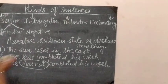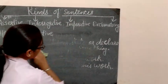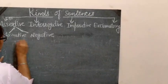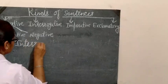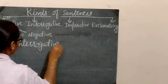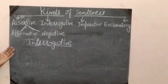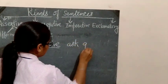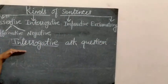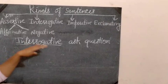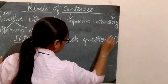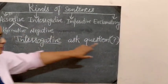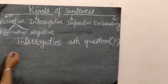Now let's move on to the next kind of sentence — that is interrogative. What is an interrogative sentence? The sentence that asks a question. These types of sentences are always followed by a question mark.